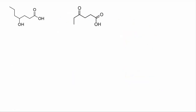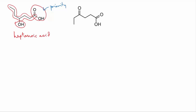Now for a couple of trickier ones. First one: find the main chain. Here it is — it's seven carbons long, so it's heptane. It has a carboxylic acid group on this end and an alcohol group in the middle. Of those two, the carboxylic acid has the higher priority, so the root of the name is heptanoic acid.